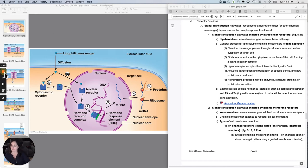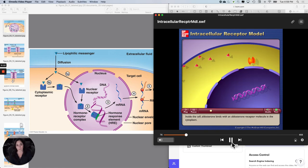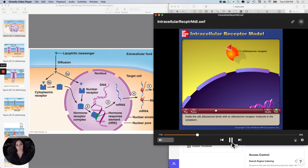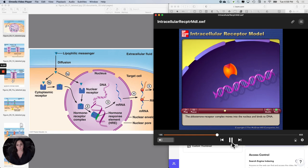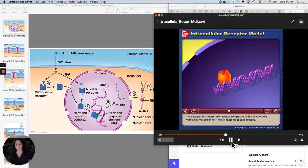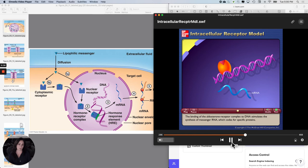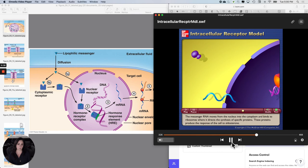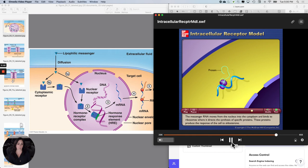Quick animation of gene activation. Aldosterone is a lipid soluble hormone that can easily diffuse through the plasma membrane. Inside the cell, aldosterone binds with an aldosterone receptor molecule in the cytoplasm. The aldosterone receptor complex moves into the nucleus and binds to DNA. The binding of the aldosterone receptor complex to DNA stimulates the synthesis of messenger RNA, which codes for specific proteins. The messenger RNA moves from the nucleus into the cytoplasm and binds to ribosomes where it directs the synthesis of specific proteins. These proteins produce the response of the cell to aldosterone.